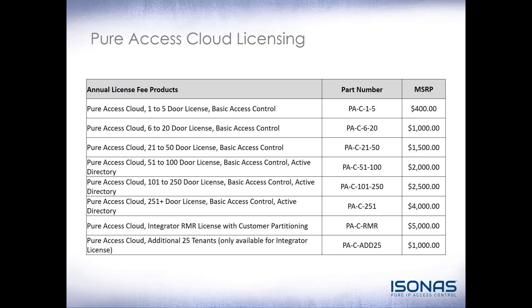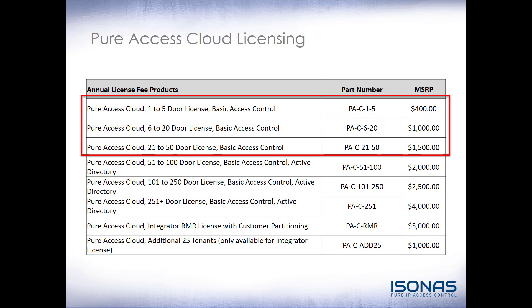Peer Access Cloud licensing is an annual fee. Isonus takes care of all the updates and maintaining all the cloud infrastructure. Looking at the licensing structure, we have 1-5, 6-20, and 21-50 door or access point licenses in basic access control. Once you go over 50 doors, you have Active Directory integration into Peer Access. You can refer to our Active Directory course on YouTube or our online learning portal. Once you go over 251 doors, that's basically the unlimited license, and you can add as many access points as you want.